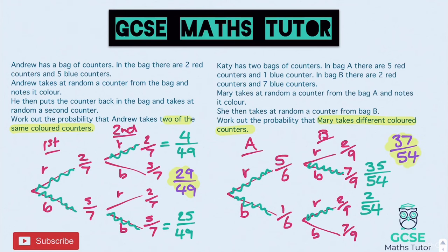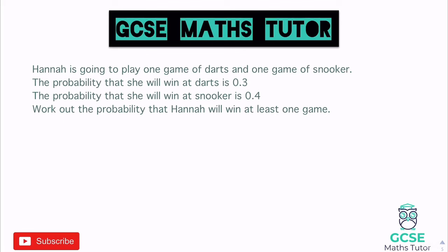Now we've got some decimals introduced — not necessarily harder, just slightly different. Hannah is going to play one game of darts and one game of snooker. The probability she'll win at darts is 0.3 and the probability she'll win at snooker is 0.4. We need to work out the probability that Hannah will win at least one game.